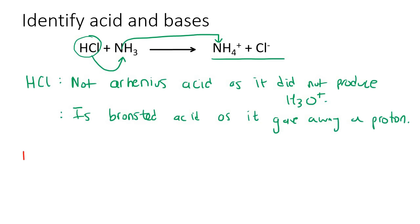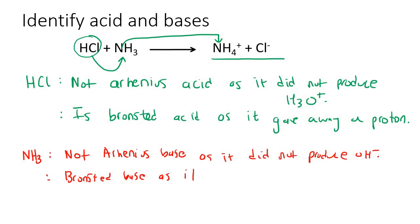Now we can look at NH3. It will not be an Arrhenius base. How come? It does not produce any OH-. Can you see that? There are no OH- as it did not produce OH-. However, it will be a Bronsted base as it accepts a proton.